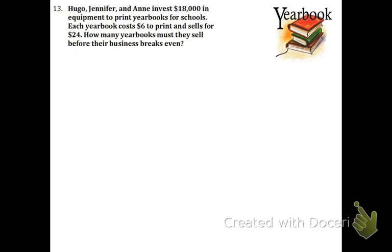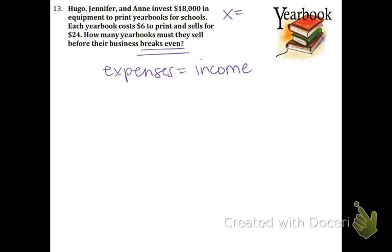Hugo, Jennifer, and Annie invest $18,000 in equipment to print yearbooks for schools. Each yearbook costs $6 to print and sells for $24. How many yearbooks must they sell before their business breaks even? Remember, when you're at a break-even point, that means you're not losing money but you're not gaining money. So at that very point, the expenses equals the income. Our variable x is going to be the number of yearbooks.